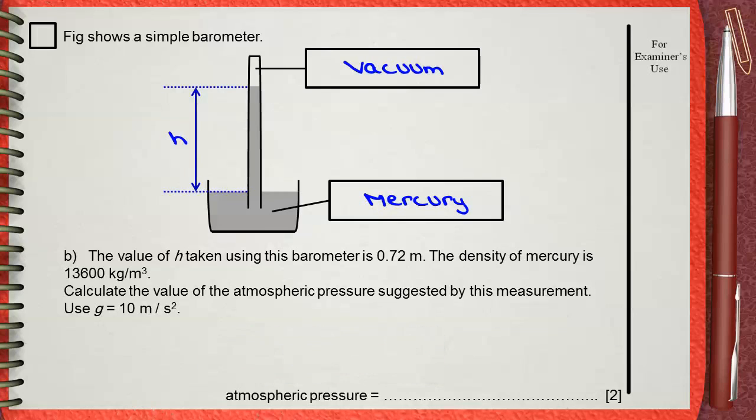It's important to identify the givens in your question. You have 0.72 meters, and this is H, the height. You also have 13,600 kilograms per meter cubed, which is the density. The question asks for the pressure. The equation that links these physical quantities is pressure equals DGH.